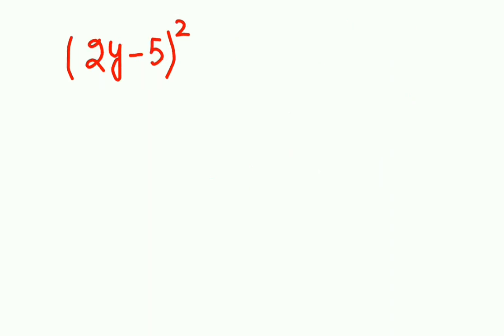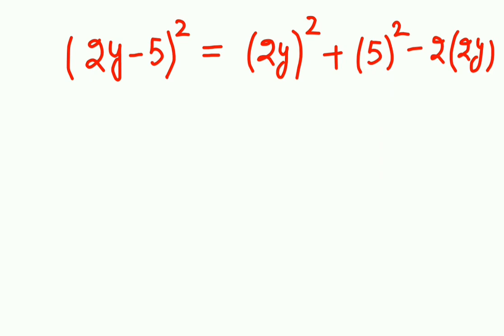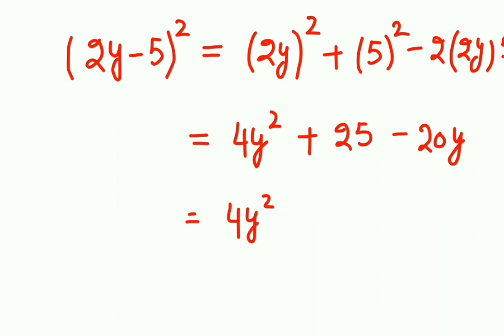Dekhi, next 2y whole square plus y whole square minus 2 into first term into second term. Ab 2y ka whole square solve karoge, tho 4y ka square plus 25 minus 20y. Isse hem iske correct karke lick lenge.